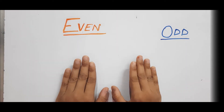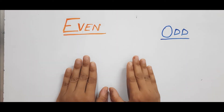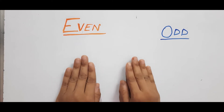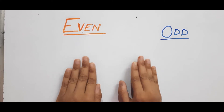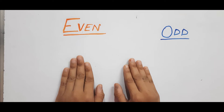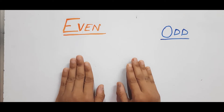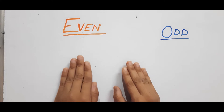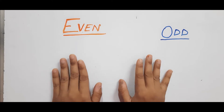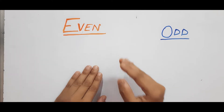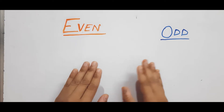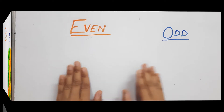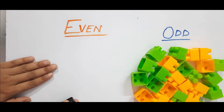Hello everyone, welcome back to our channel Learn With Kids. I hope you all are doing great. In today's video I am going to share a new concept with my kid about even and odd numbers. If your kids are in the four to five years old age group, or even in kindergarten, UKG, or grade one, and you want to introduce the even and odd number concept to them, you can refer to all these ideas to explain it in a very simple and fast way.